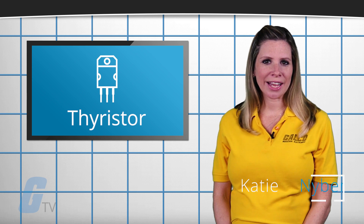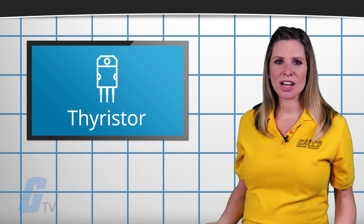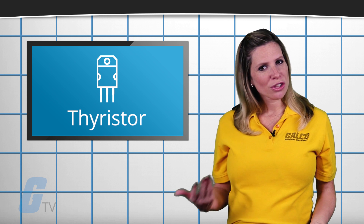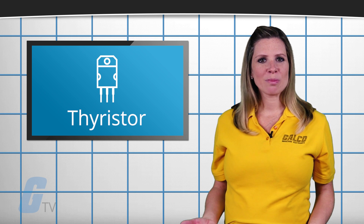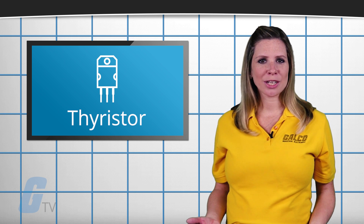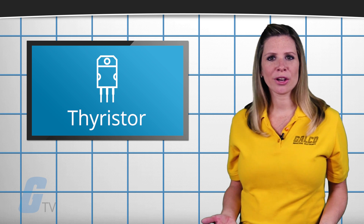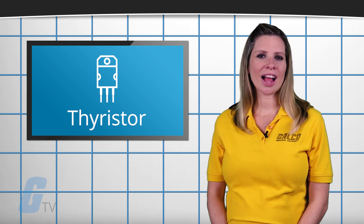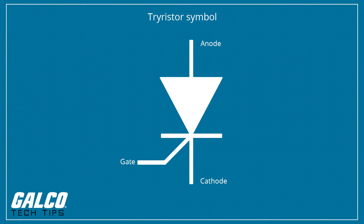A thyristor is a four-layered semiconductor rectifier in which the flow of current between two electrodes is triggered by a signal at a third electrode. A thyristor usually has three electrodes: an anode, a cathode, and a gate.